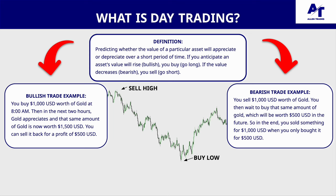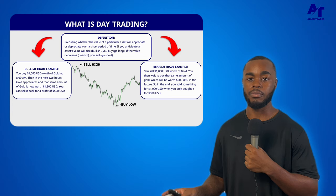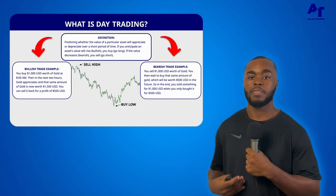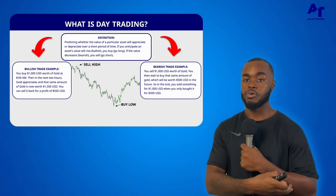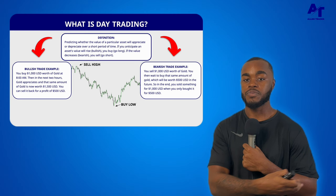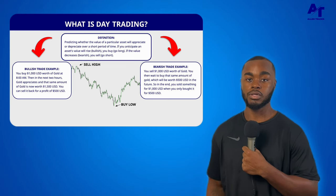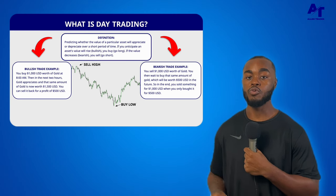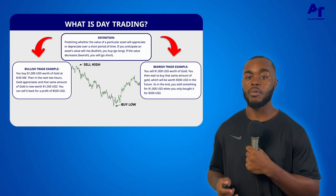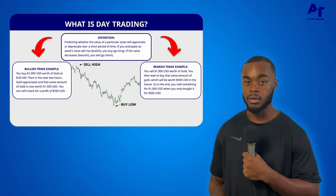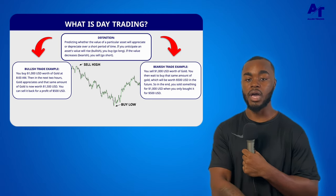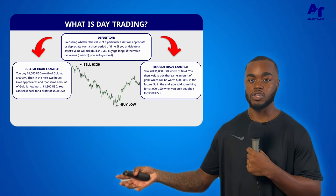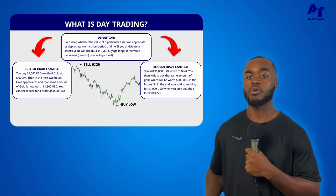Now that may sound a little confusing, so think of it like this. Let's say you're a sneakerhead and you sell sneakers as a side hustle. You have a connect where you can buy a specific pair of shoes for $500, but you meet someone online willing to pay $1,000 for that same pair. You make the sale with the person online, but you don't have the shoes yet. You go later in the day, buy that pair for $500, and ship it off to the customer for the $1,000 sale, giving you a profit of $500.